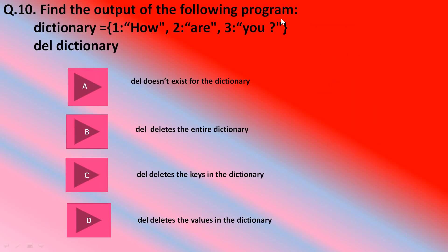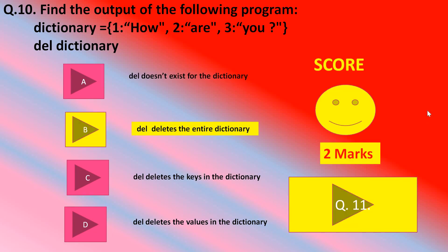Number 10. Find the output of the following program: dictionary equals 1 colon how, 2 colon are, 3 colon you. How are you? Del dictionary. If I give this command del dictionary, then what will be the output? Del doesn't exist for the dictionary. Del deletes the entire dictionary. Del deletes the keys in the dictionary. And del deletes the values in the dictionary. Let us try this one. Yes students, those who thought B part is correct - del deletes the entire dictionary - were right. Give yourself two marks.